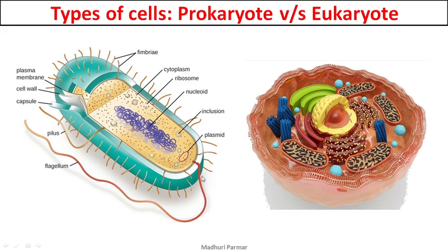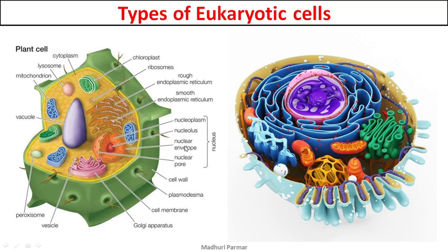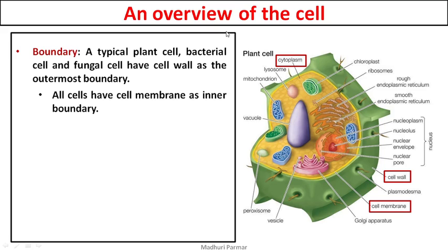Let us study what are the components of a cell — what all organelles or membranes make up a cell. Robert Hooke named it a cell because it looked like a room. In a room you have a wall, so even in a cell you should have a boundary which separates the cell from its surroundings. In a plant cell, the outermost boundary is called a cell wall. Cell wall is seen in plants, bacteria, and fungus.